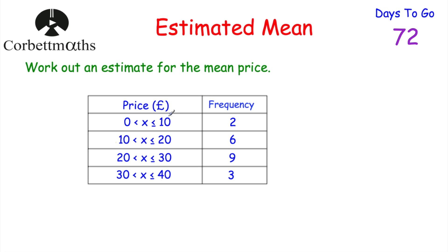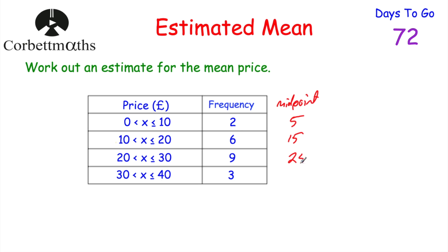If we let them be those midpoint values, we can work out an estimate for the total, add them all up to get our estimate for the grand total, and then divide by the total frequency to give us the estimated mean. So we're going to add on a column called the midpoint column: £5, £15, £25, and £35 for each category respectively.